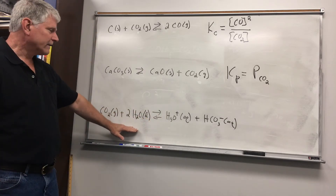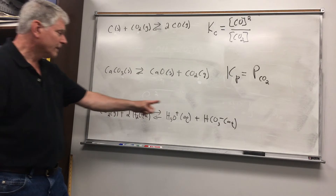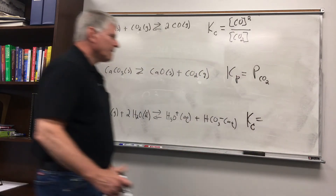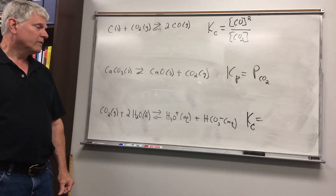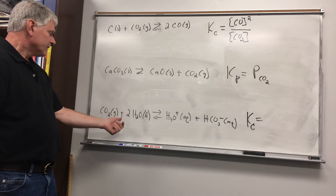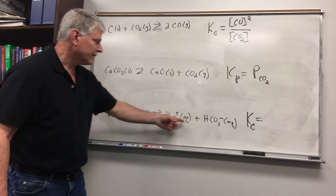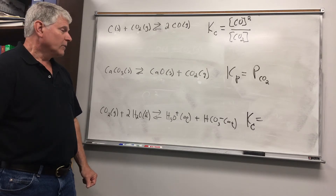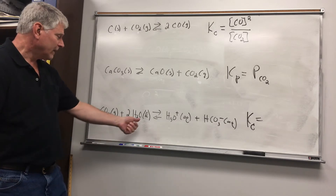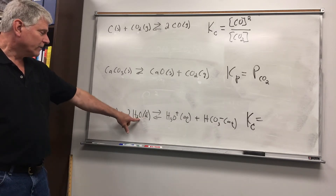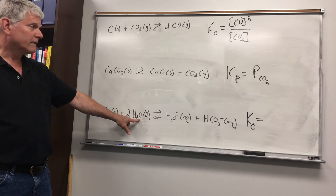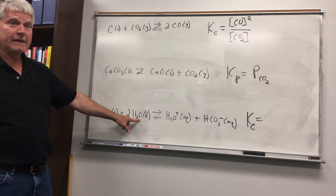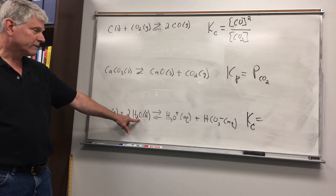Now let's look at this bottom reaction, which is in solution. We have a gas phase species, a liquid, and dissolved species in solution. We'll write the equilibrium constant in terms of concentration, which is a more useful unit for solution species. We include aqueous substances in the equilibrium constant because their concentrations depend on their amounts. However, we have a liquid — water — and we would not include that in the equilibrium constant for the same argument used for solids: even though the liquid amount changes, its density is the same, so its concentration is constant.